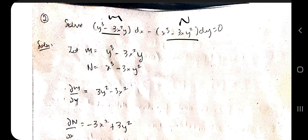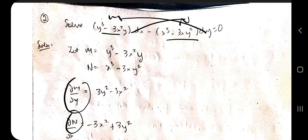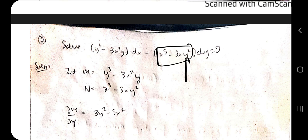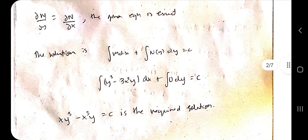Let's see another problem. Take the M and N values from the given equation. Compute del M by del y and del N by del x — if they match, it's an exact equation. Apply the formula: integral of M dx plus integral of N(y) dy. Here, in N there is no pure y term — y-squared has an x term along with it, so we take nothing from N; that part is zero. Differentiate to get the final answer.